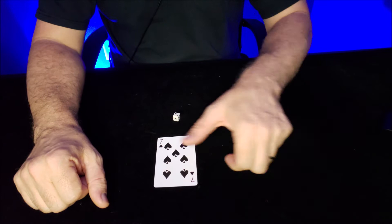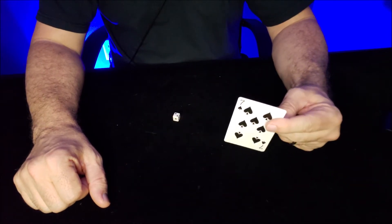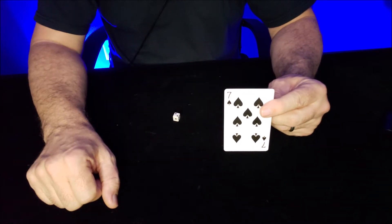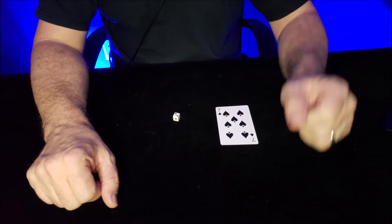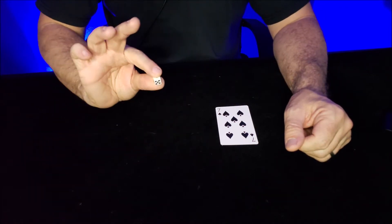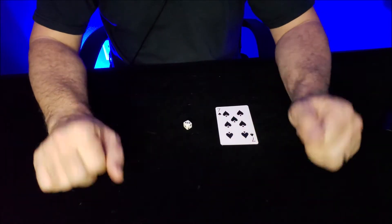You're gonna go through one of the decks of cards you got in your kit and find a seven. Then you're gonna go into the little film canister and find the dice. That's all you need.